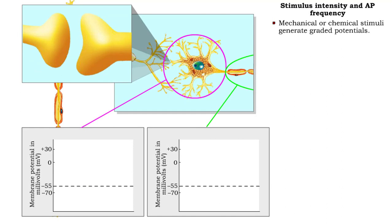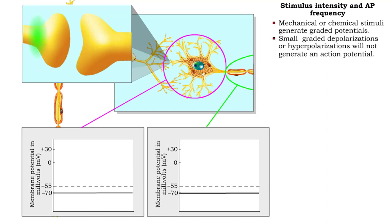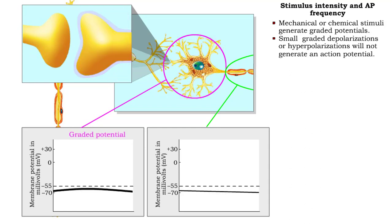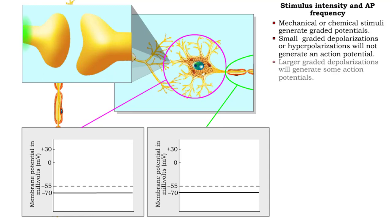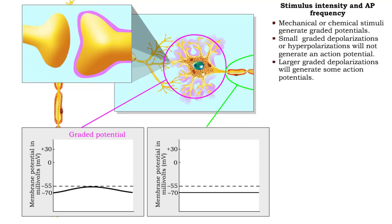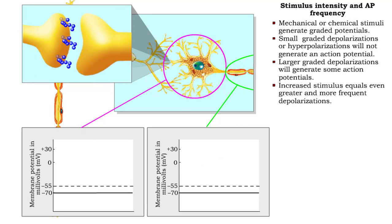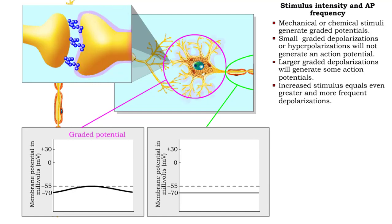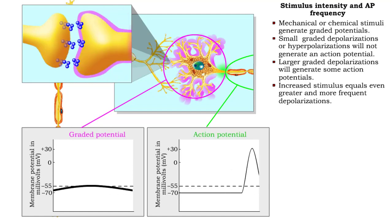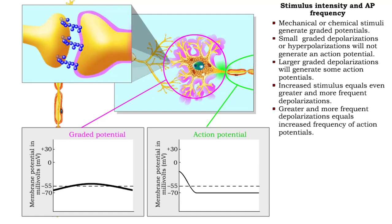Nervous signals are generated by stimuli. Mechanical or chemical stimuli generate graded potentials. Small depolarizations or hyperpolarizations will not generate an action potential. Larger graded depolarizations will generate some action potentials. When the stimulus is increased, and there are even greater and more frequent depolarizations, an increased frequency of action potentials results.